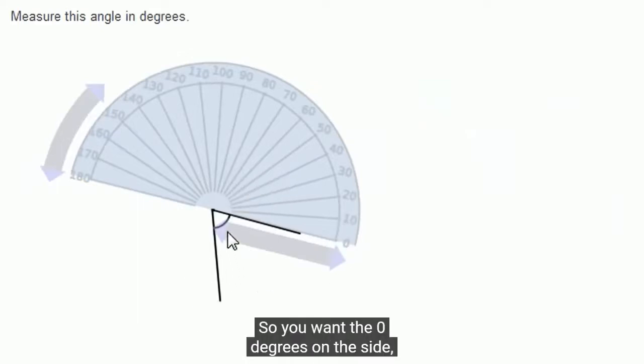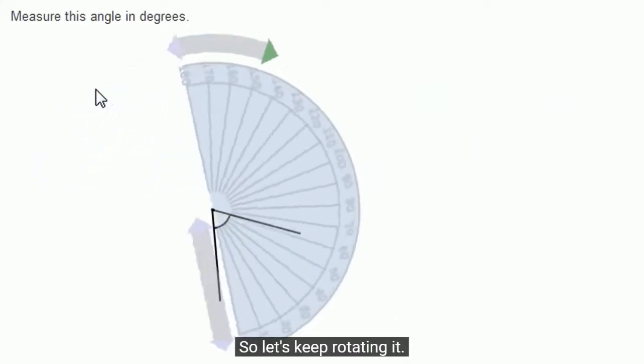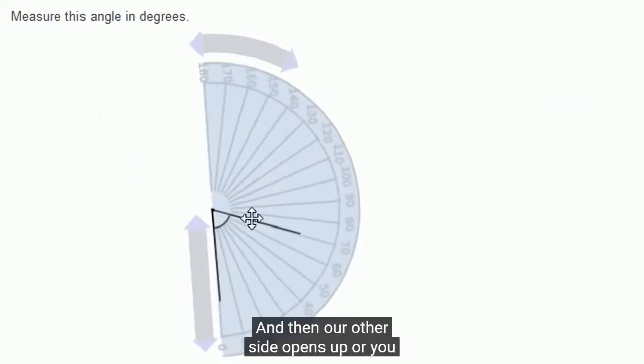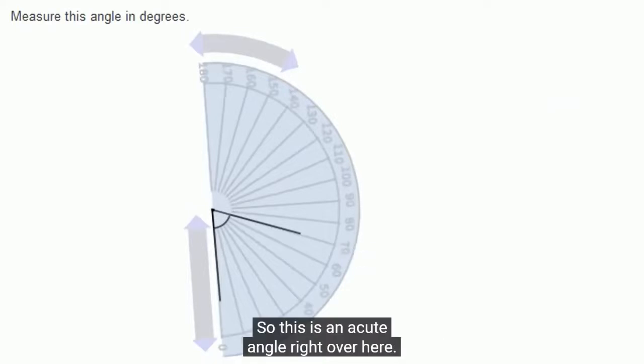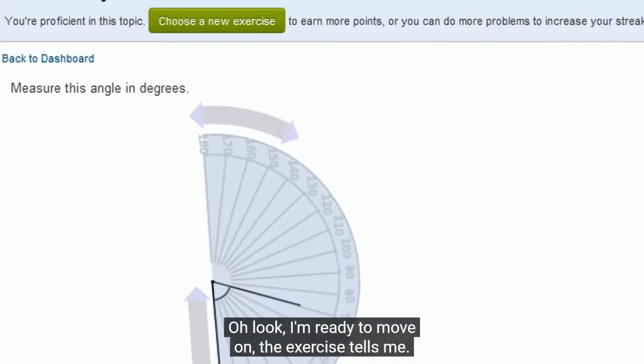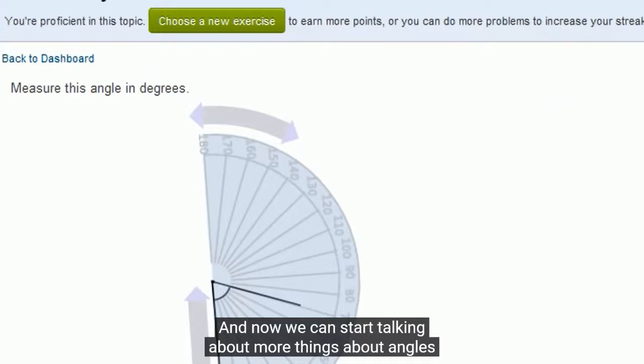So you want the zero degrees on the side so that the other side is within the protractor. So let's keep rotating it. And then our other side opens up or you could say points to 70 degrees. So this is an acute angle right over here. So it is 70 degrees. So I'll leave you with that. I'm ready to move on, the exercise tells me. And now we can start talking more things about angles now that we know how to measure them.